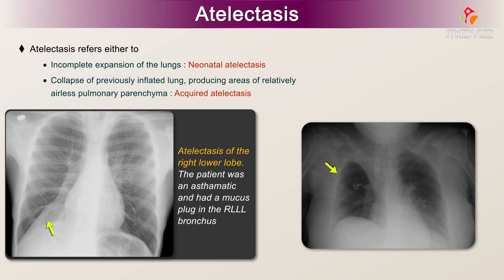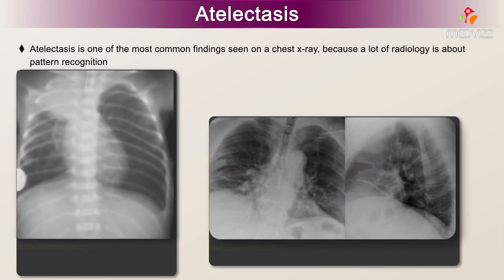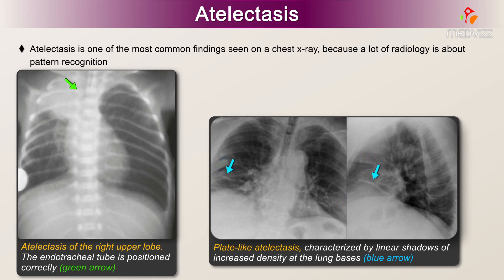Acquired atelectasis: airway collapse may involve all or part of a lung. Atelectasis is one of the most common findings seen on a chest x-ray, because a lot of radiology is about pattern recognition.